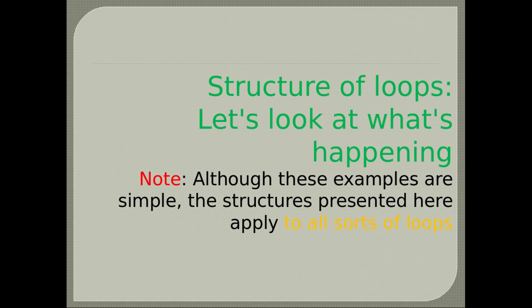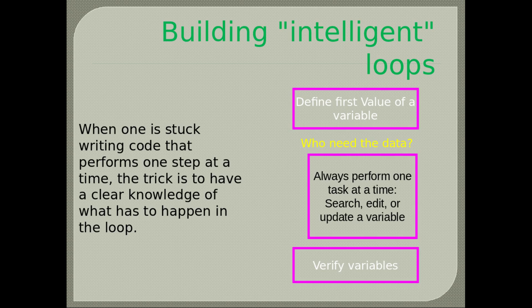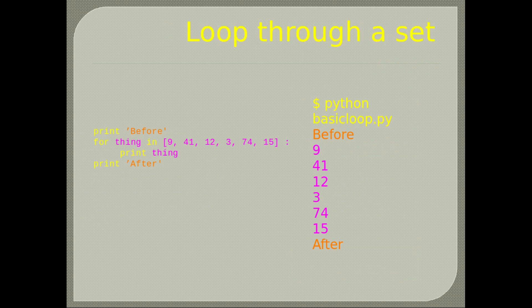Structure of loops: note that although these examples are simple, the structures apply to all sorts of loops. Building intelligent loops: when stuck writing code one step at a time, have clear knowledge of what has to happen in the loop. Define the first value of a variable, ask who needs the data, always perform one task at a time — search, edit or update a variable. Loop through a set: this example goes through all values of the set and prints each one, printing before and after to see when the loop starts and ends.